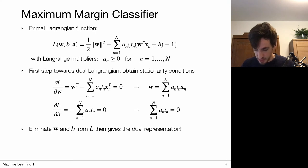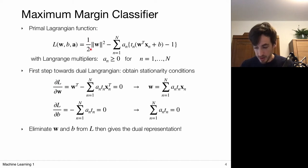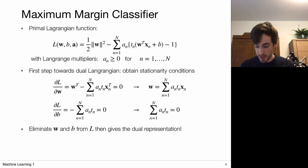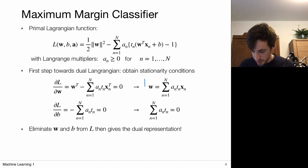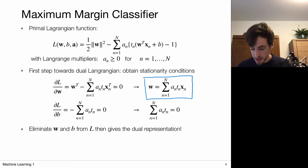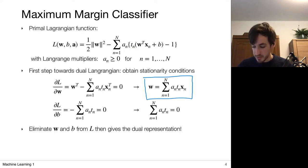To derive the dual Lagrangian, we compute derivatives of the primal Lagrangian with respect to the primal parameters and set them to zero. Taking the derivative with respect to w gives: w = sum over n of a_n * t_n * x_n. Taking the derivative with respect to b gives the constraint: sum over n of a_n * t_n = 0. These are the optimality conditions that express w in terms of dual variables.